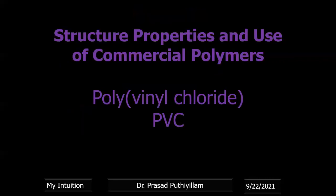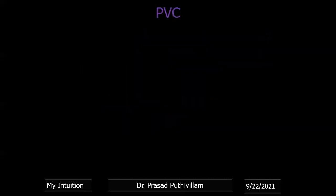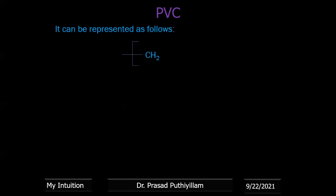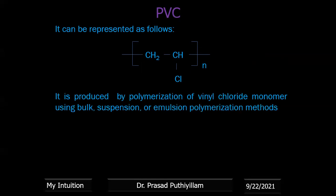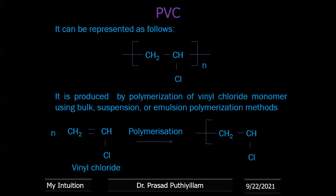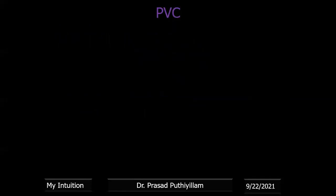The next polymer is polyvinyl chloride, or PVC — widely used in PVC pipes in daily life. It is represented as [CH2-CHCl]n. Vinyl chloride (CH2=CHCl) is the monomer used for polymerization, done by bulk, suspension, or emulsion polymerization methods. N molecules of vinyl chloride undergo polymerization to give the corresponding polymer [CH2-CHCl]n.